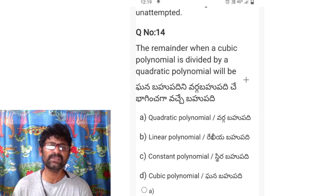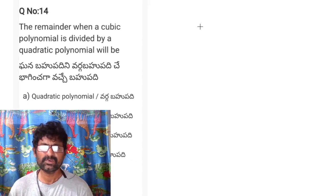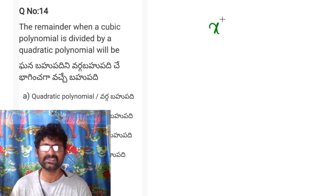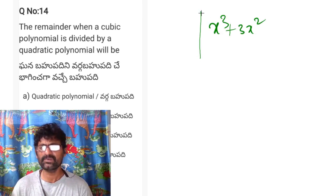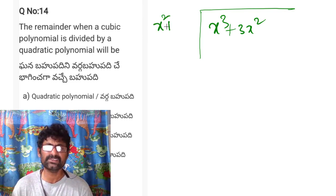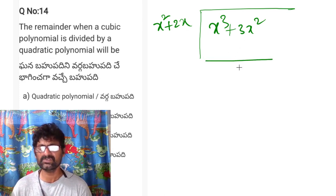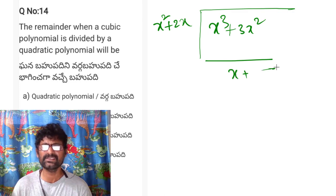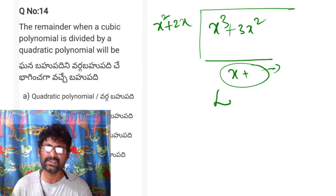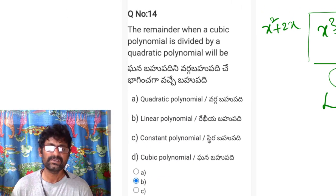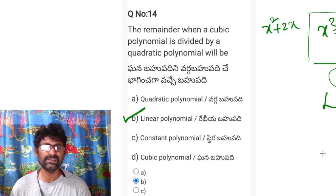Question 14: the remainder when a cubic polynomial is divided by a quadratic polynomial. For example, dividing x³ + 3x² + ... by x² + 2x gives a remainder of the form x + something, which is a linear polynomial. So option B, linear polynomial, is correct.